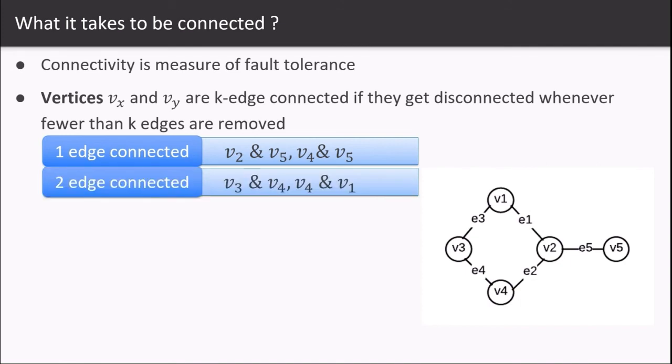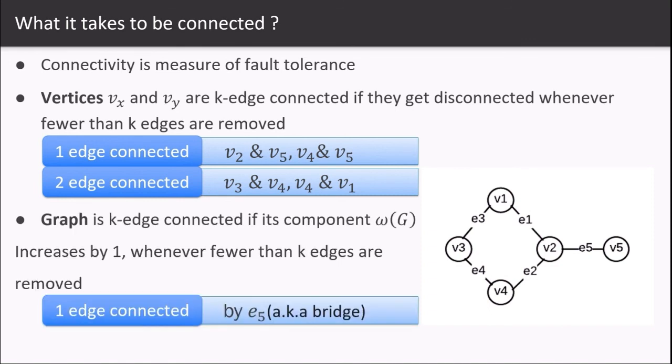Same goes for v4 and v1 by edges e4 and e2. For a graph, it's k-edge connected if its component is increased by one whenever fewer than k edges are removed.